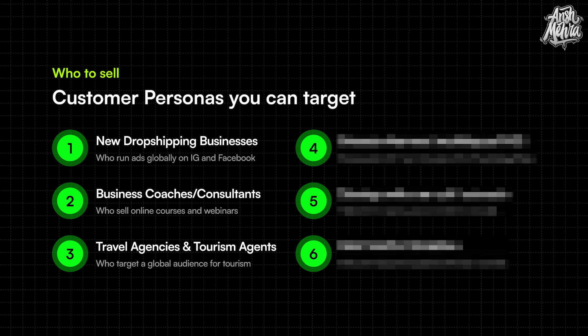Number three: travel agencies and tourism agents who want to sell to a global audience. Let's say there's one travel agency in a specific part of the world, and they are targeting people in a different part of the world. You can go to these travel brands and say that instead of running ads in a single language, you can target a specific place and run these ads in their native language.